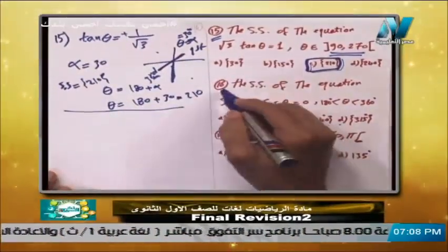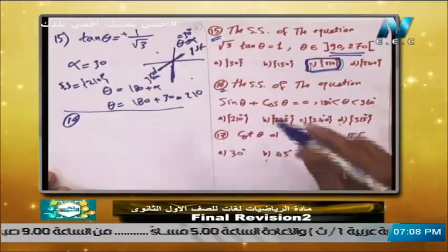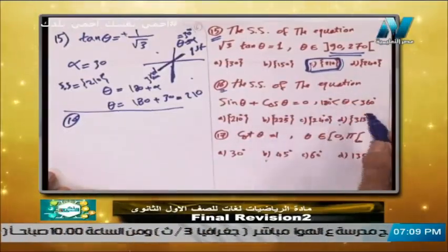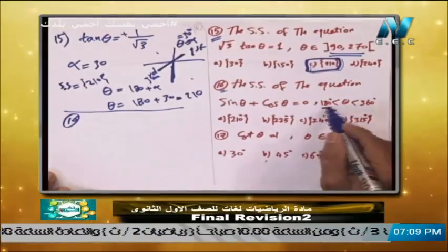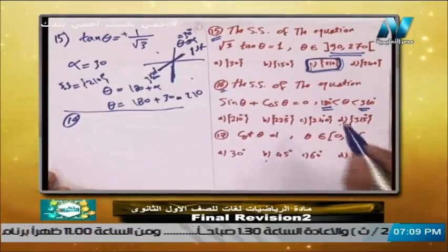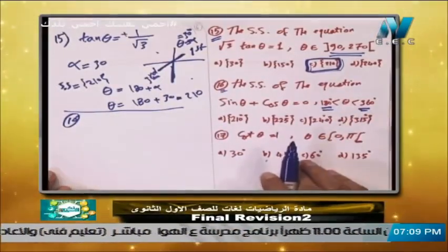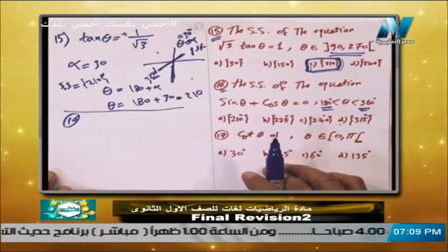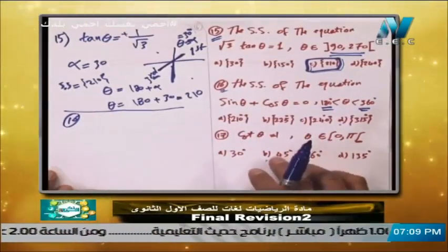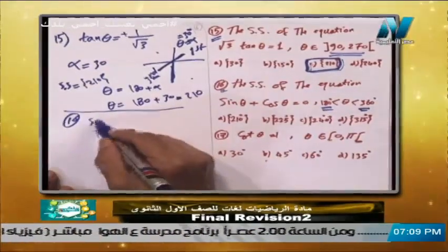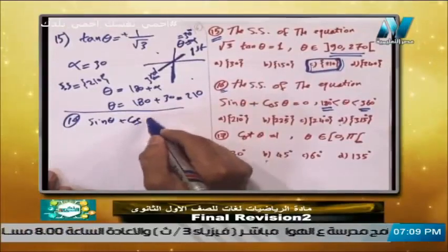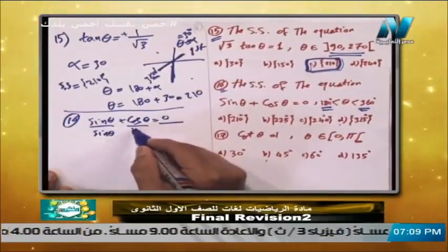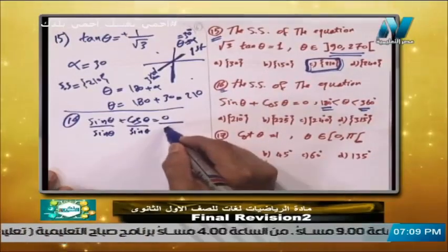Number 16: find the solution set of sine theta plus cosine theta equals 0, where theta is between 180° and 360° — that is, the third and fourth quadrants. We have sine theta + cosine theta = 0. Dividing all terms by sine theta: sine/sine equals 1, and cosine/sine equals cot theta.